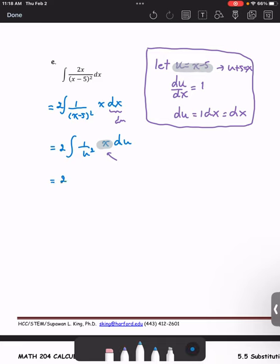Then we have 2 times the integral of 1 over u squared. x is the quantity u plus 5 multiplied by du. The problem now is all in the form of the u variable.